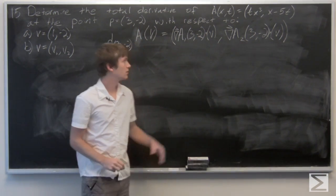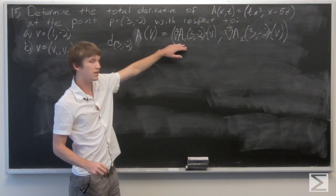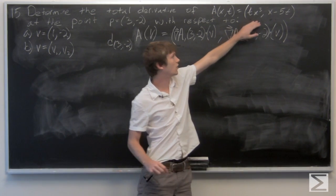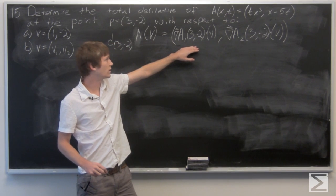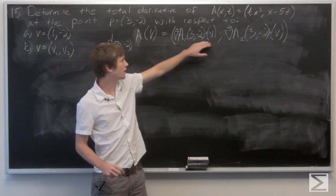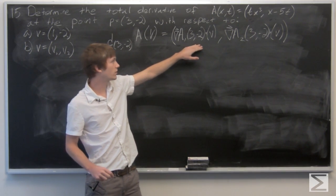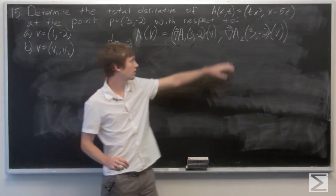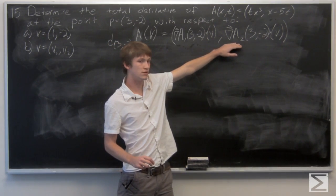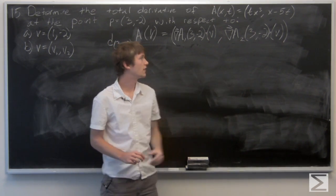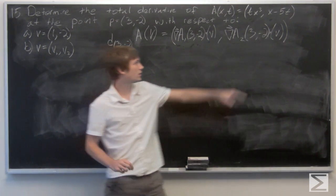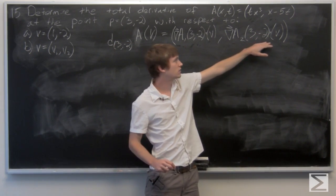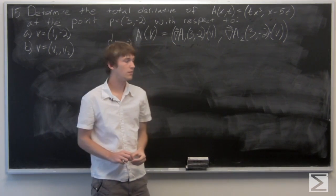We can see that the total derivative is going to be the gradient vector of the first component, evaluated at the point (3, negative 2), dotted with the vector v. And then the second component is going to be the gradient vector of the second component at (3, negative 2) dotted with the vector v.